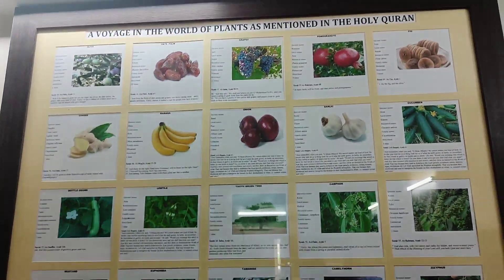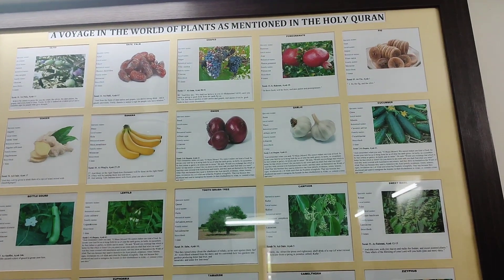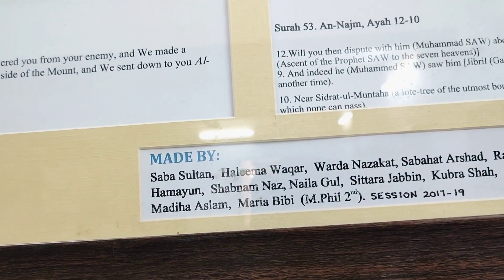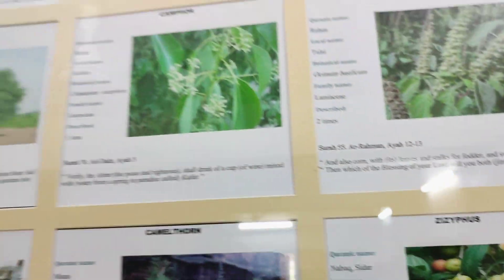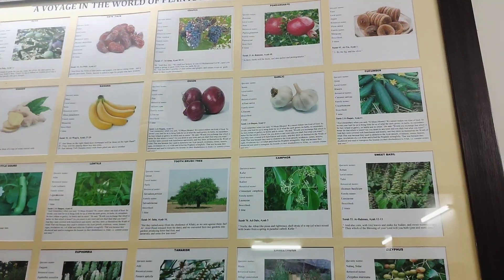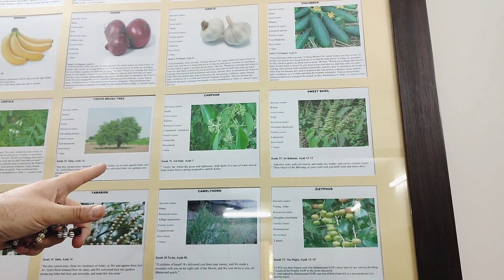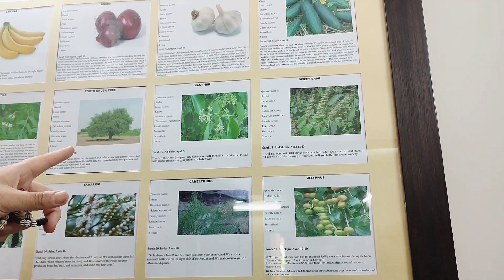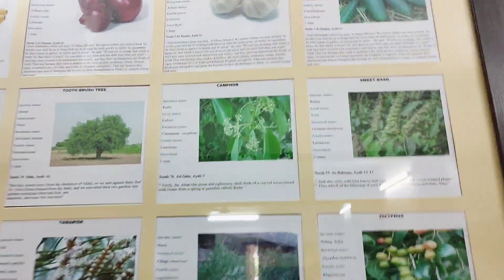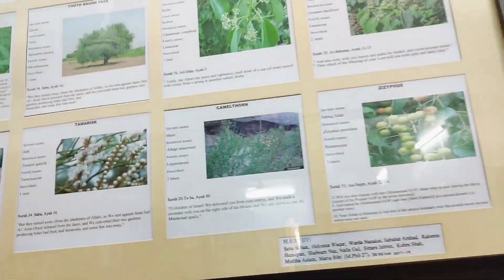This is a frame that shows the plants which are mentioned in the Quran, displayed so that students know about the Quranic plants. This tree, cultivated on the university campus this year, is Cinnamomum camphora. We have established a Quranic garden and these trees are growing in that garden as well.